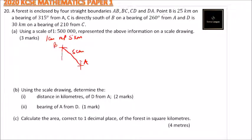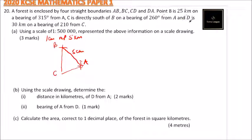This is our point B. We are told C is directly south of B on a bearing of 260° from A, so you measure an angle of 260° to get our C. D is 30 km on a bearing of 210° from C, which gives us our point D.